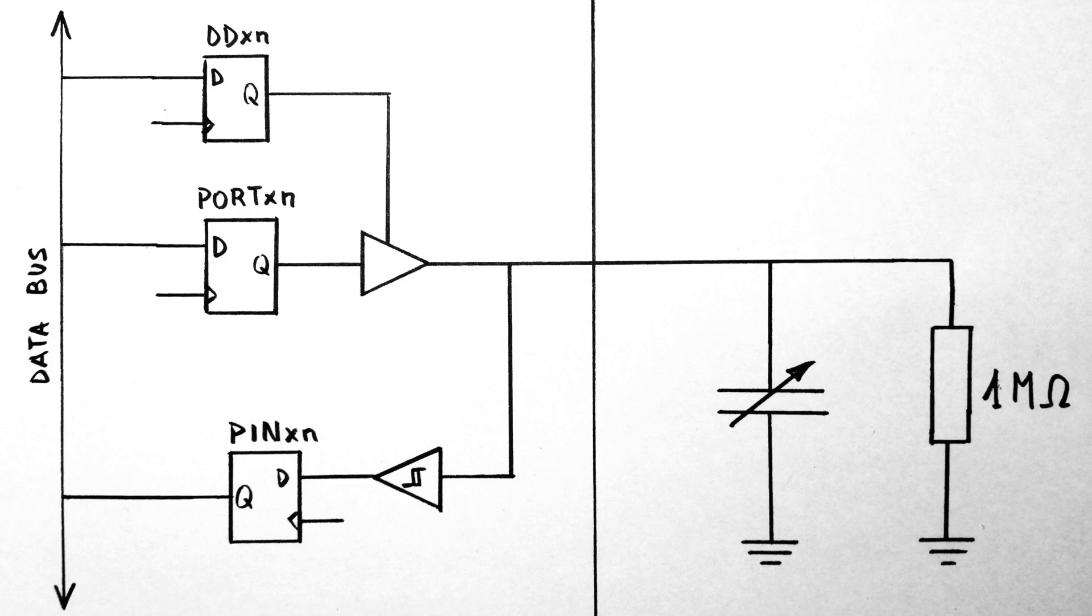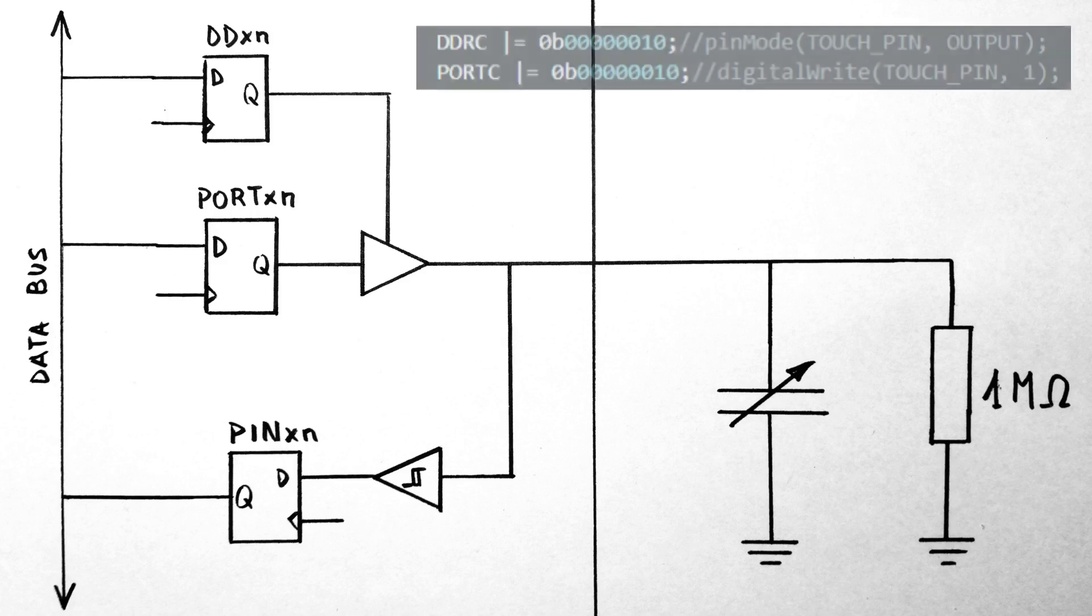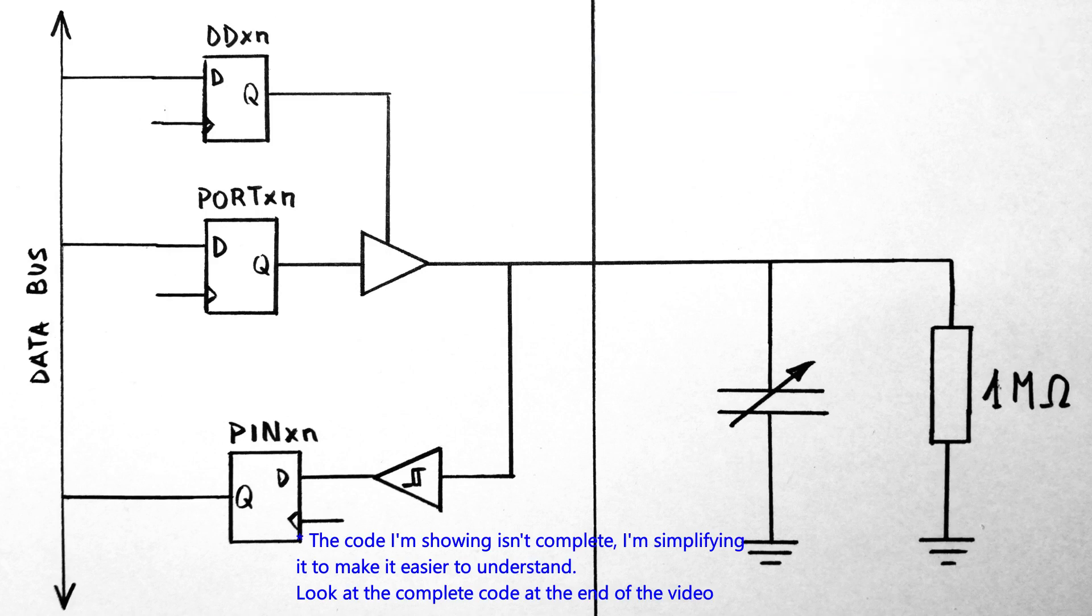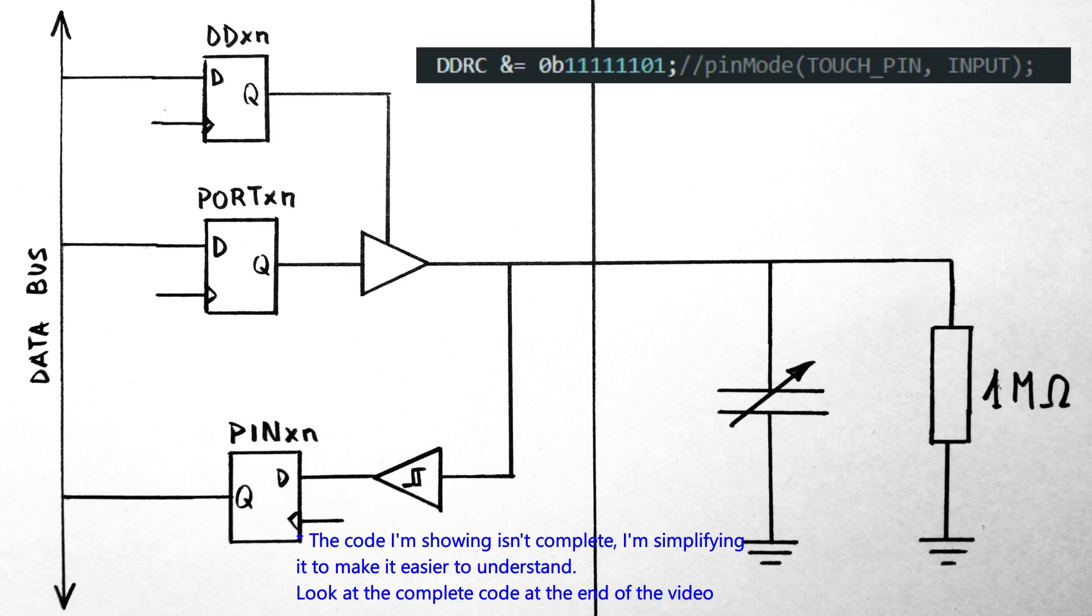To measure the capacitance on the pin here, all we have to do is first thing we enable as output the pin and we write it to logic 1, so 5 volts, and this will obviously quickly charge this stray capacitance. The next thing is we make the pin an input so we'll go in high impedance mode. This is essentially like disconnecting it.